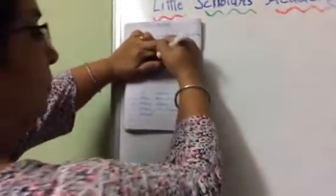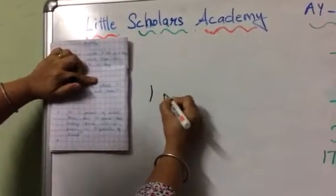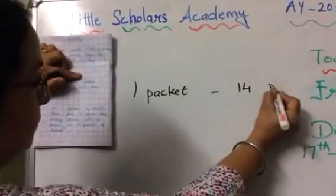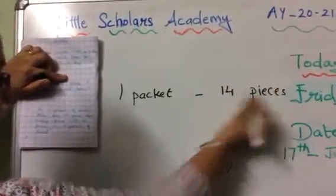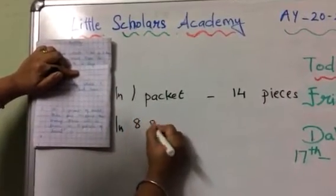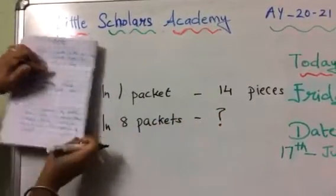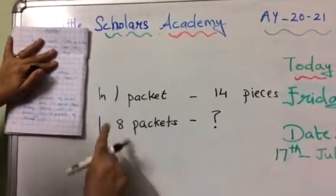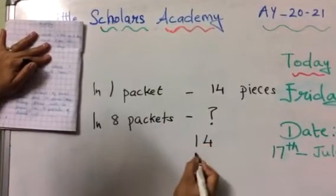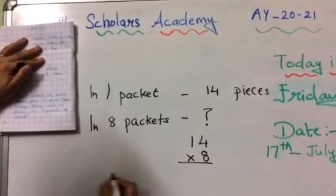So let us do this question. In one packet of bread there are 14 pieces. One packet, how many pieces? 14 pieces. In 8 packets, how many pieces will be there? So this is the question mark. Question mark means this is what we want to know. Toh kaise hai? Wonderful. What we will do is 14 multiplied by 8.